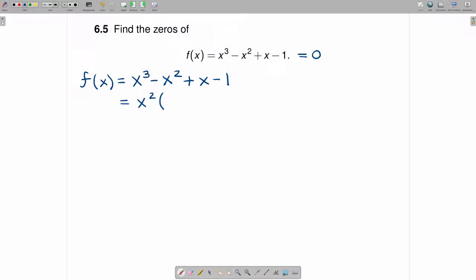So when you factor an x² out of x³, you're left with an x. When you factor an x² out of x², you've got a -1, plus, and then I'll just put parentheses around x - 1.